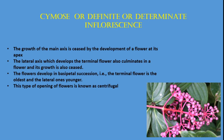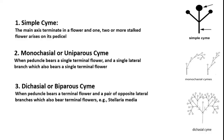Cymose inflorescences are again divided into different categories. The first category is Cymose, where the main axis terminates in a flower. Two or more stalked flowers are raised on its pedicel. The second category is Monochasial or Uniparous Cyme, when the peduncle bears a single terminal flower and a single lateral branch which also bears a single terminal flower.